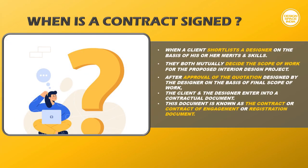When is a contract signed? When a client shortlists a designer on the basis of his or her merits and skills, they both mutually decide the scope of work for the proposed interior design project. After approval of the quotation designed by the designer on the basis of the final scope of work, the client and the designer enter into a contractual agreement. This document is known as the contract, contract of engagement, or registration document.